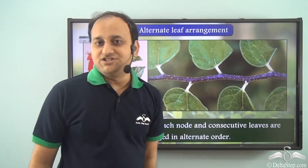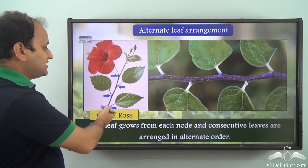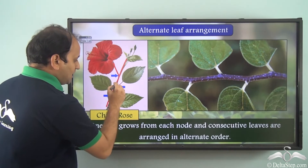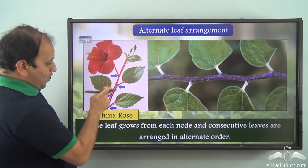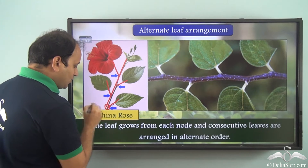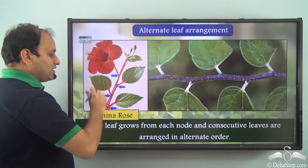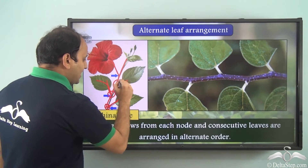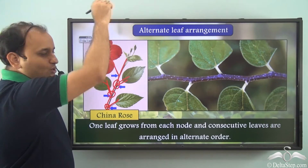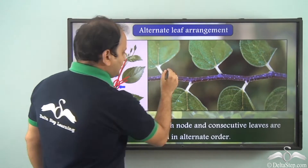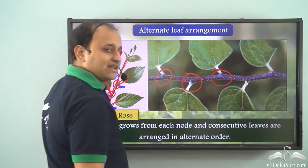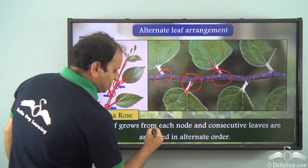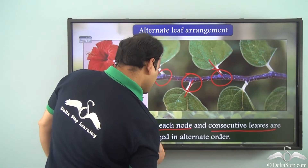Let's understand some types of leaf arrangement. First is alternate leaf arrangement. As you can see in the case of China rose, this is the stem and one leaf comes out from here, then from the other side, then here, then here. So alternate nodes have one leaf each. One leaf is coming out on the right, then on the next node the leaf comes out on the left, then again on the right, and this alternate arrangement goes on. One leaf grows from each node and consecutive leaves are arranged in alternate order.